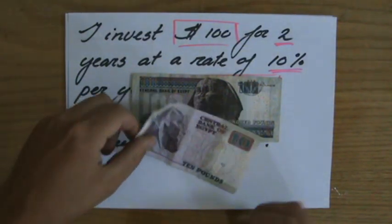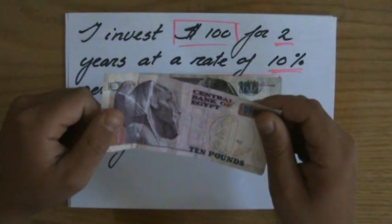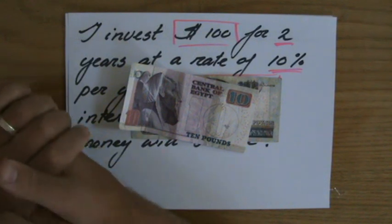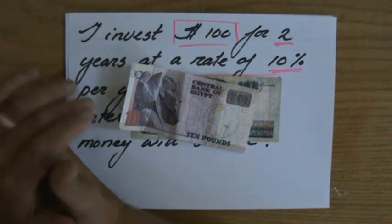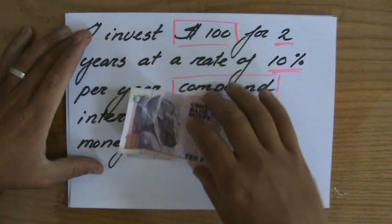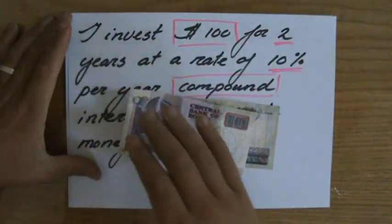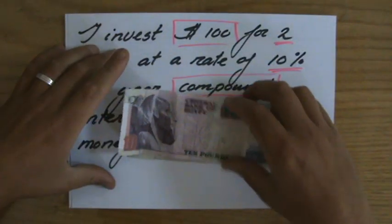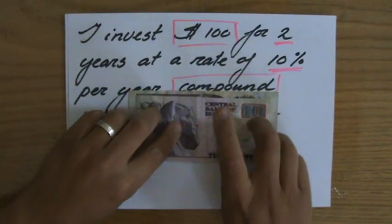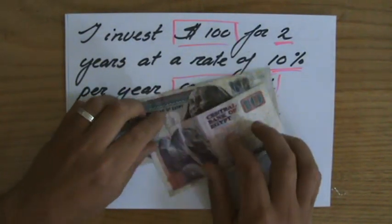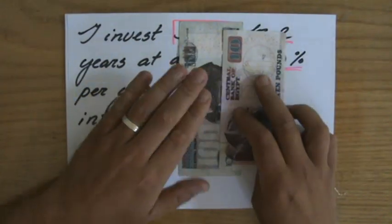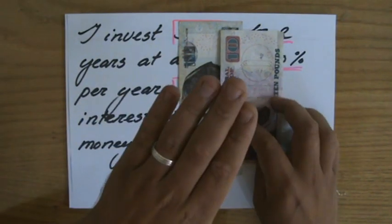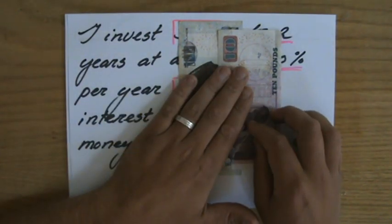So, after one year, they're going to give me 10 LE, or $10, and they say, there you go, thank you very much. Now, how much money is in my account now? Because I am investing it for two years, and the compound part is that they add this interest on top of my money. So, now, for the second year, I don't have 100 LE in my bank account, I have 110 LE in my bank account.